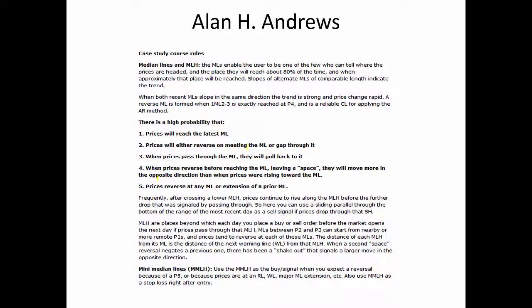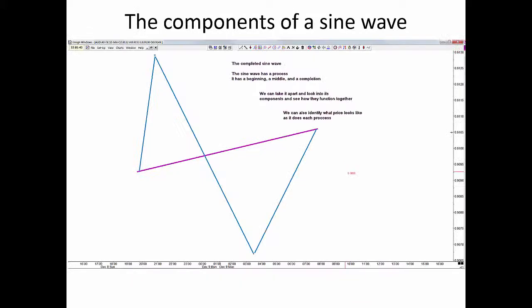Pay attention to these five main probabilities of price interacting with the median line. So let's take this apart. What's a median line? A median line is the relationship between any three alternating pivots. It doesn't matter if you're mapping euros, S&P futures, your heartbeat, the weather — notice this is starting to look like a wave.